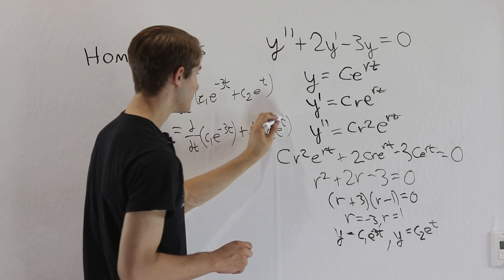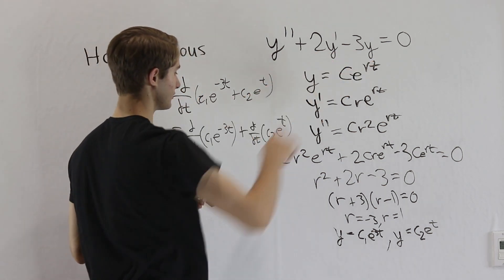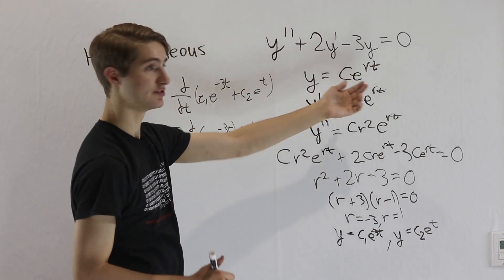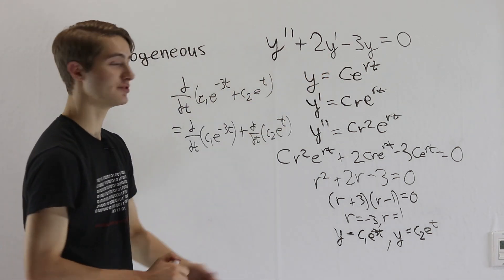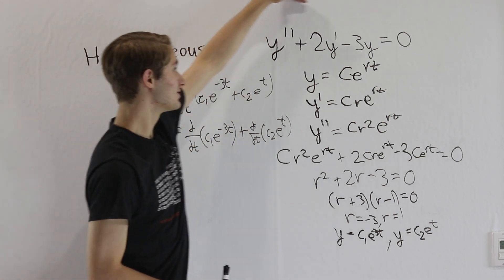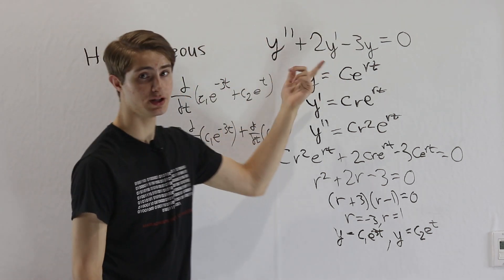Which means that if one of these satisfies this differential equation, that we add up all these derivatives and get zero, and the other one also has that property, that we add them up and get zero. If we add them together and plug them into this equation, all we're going to get is zero plus zero.